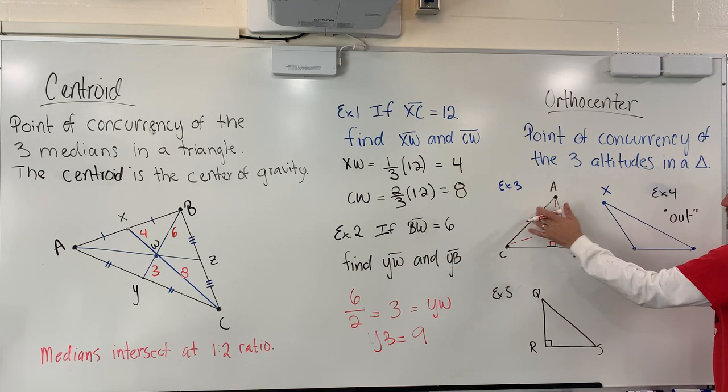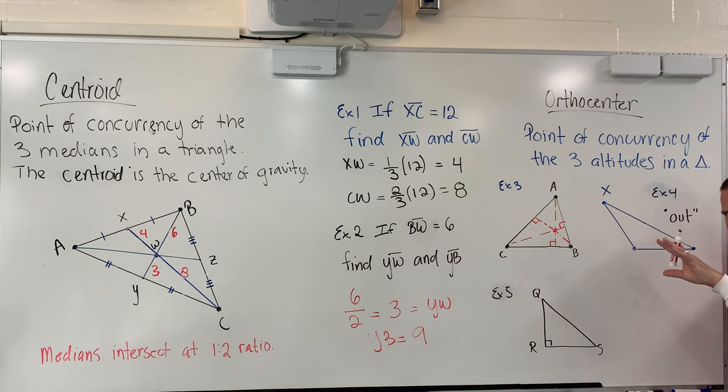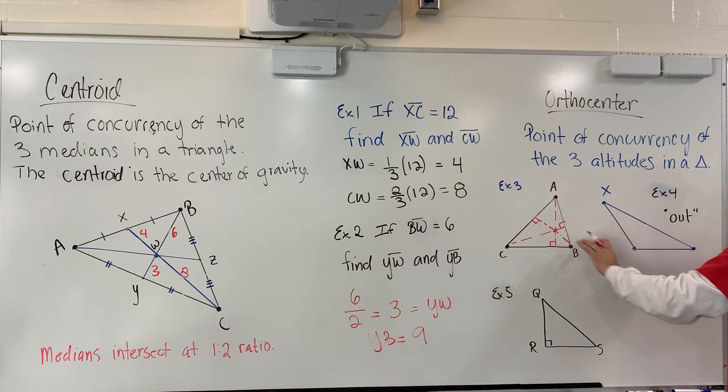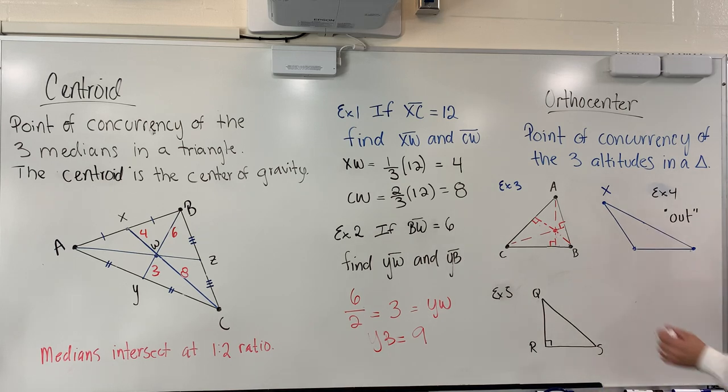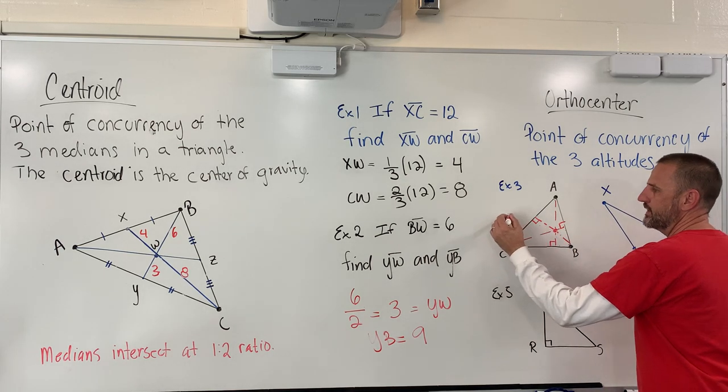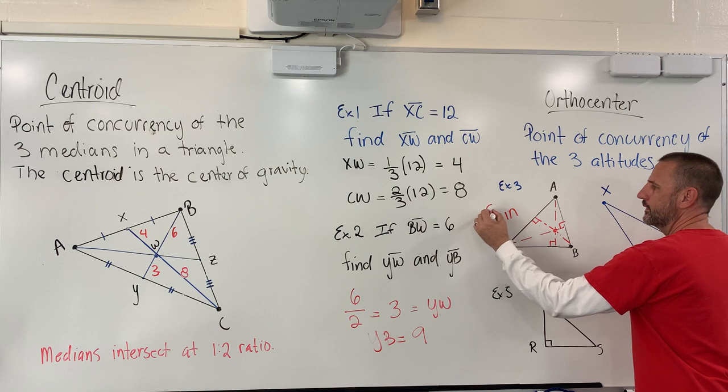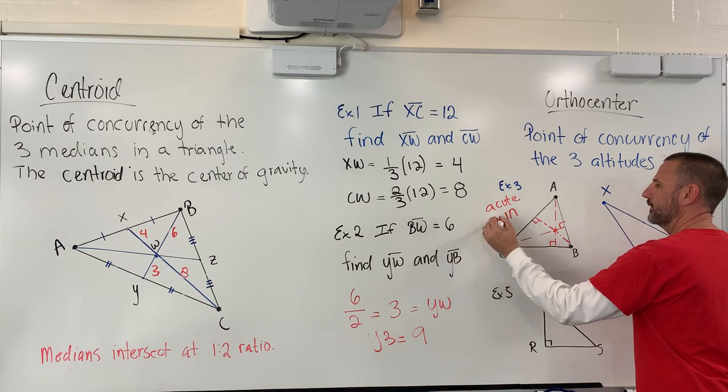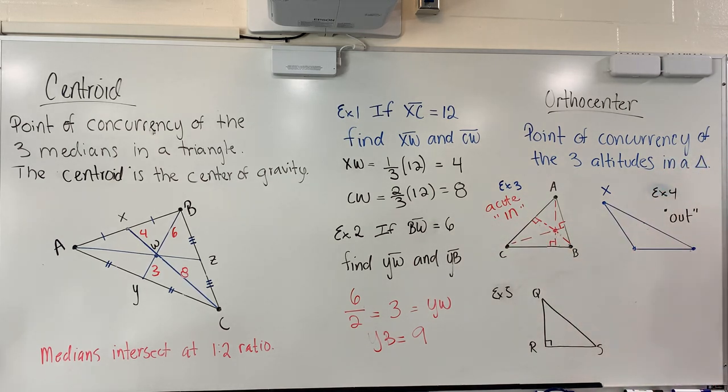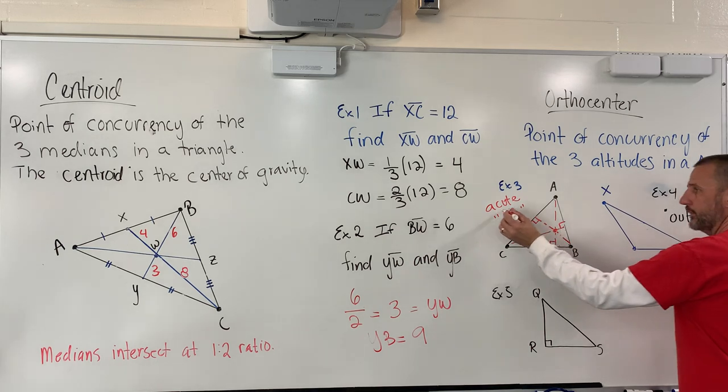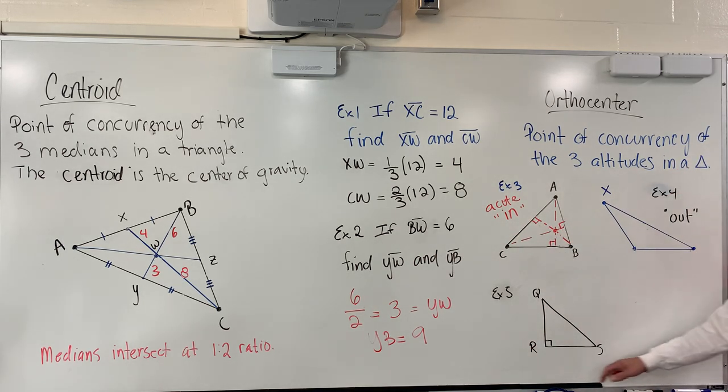So we know that the third altitude is always going to meet the other two altitudes. So as long as you figure out the first two, you always get the third one for free. And it's measured straight to the point opposite. So when we do an acute triangle, you'll find that the orthocenter is in. I'm going to write that down. Well, on an obtuse triangle, the orthocenter is going to be outside. And that's kind of odd. I'll show you how that works.